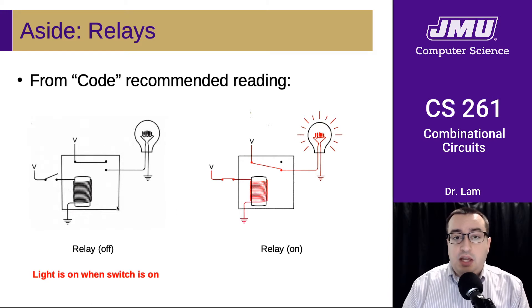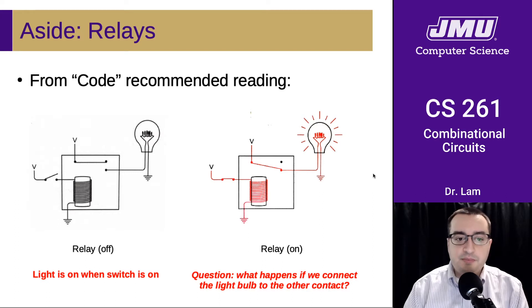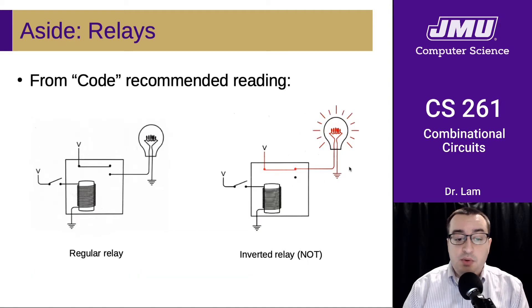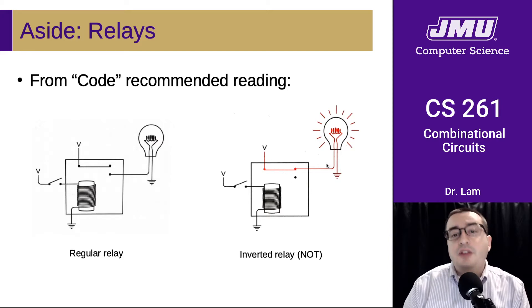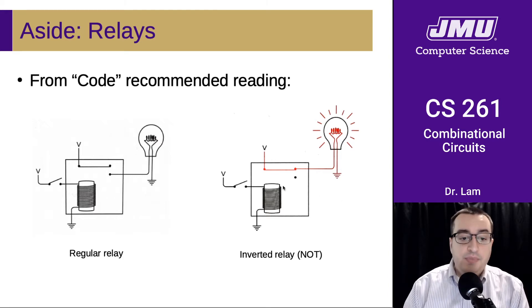So this is essentially a device where the light is on when the switch is on — that's a relay. It's worth thinking about what would happen if we connected the light bulb to the other contact instead. Well, we would get an inverted relay: whenever the switch is off the light would be on, and if the switch turns on, we pull the metal away and the light turns off. At this point you can see that this implements essentially a boolean NOT, and that's where we'd like to go next — implementing other kinds of logic using these mechanical instruments.